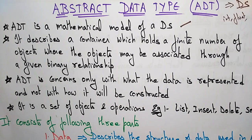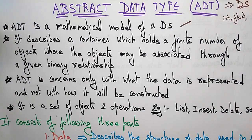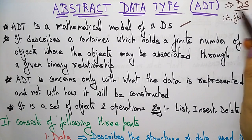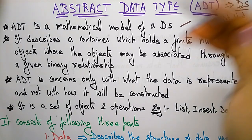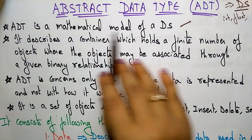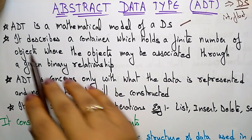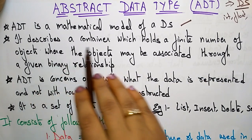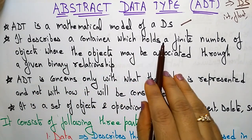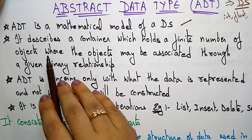Hi students, welcome back. Coming to the next topic in the subject data structures: Abstract Data Type. Abstract data type is another name for data structures. Abstract data type is a mathematical model of data structures — it describes a container which holds a finite number of objects.